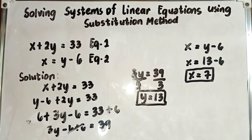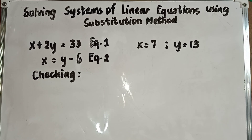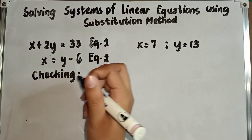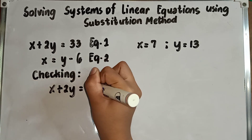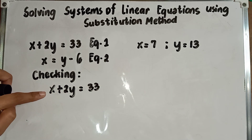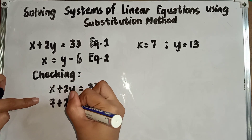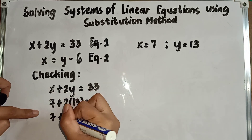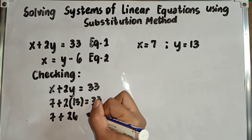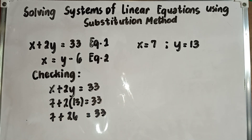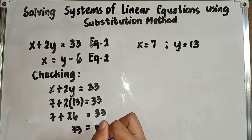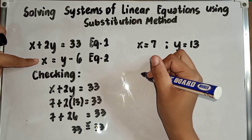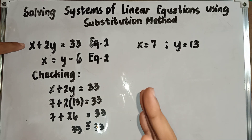To check if our answer is correct, we substitute the values of x and y into the given equations. Starting with equation 1: x plus 2y equals 33. Substituting x equals 7 and y equals 13: 7 plus 2 times 13 equals 7 plus 26, which gives us 33 equals 33. That means our answer is correct.